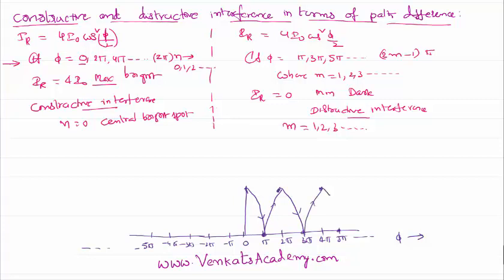If you draw the graph from maximum to 0, 0 to maximum, maximum to 0, 0 to maximum, and so on. On the other side also, at -π it is minimum, at -2π maximum, -3π is 0, -4π is maximum, -5π is 0. This is how the intensity of the interference pattern will keep varying with respect to phase, and that phase will obviously keep varying with respect to time.